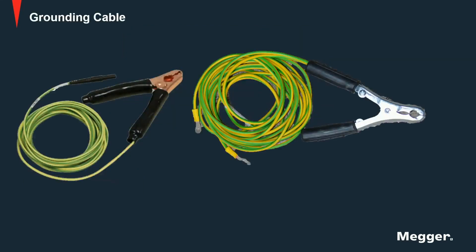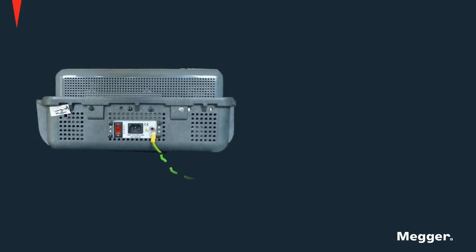Using the grounding cable provided with this unit, find a good grounding point and make a solid ground connection. Proper grounding is essential to obtaining good results. Remember that the ground terminal should be the first one to be connected and the last one to be disconnected. A solid ground connection is very important when it comes to testing current transformers.